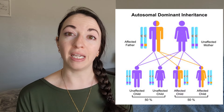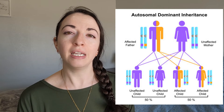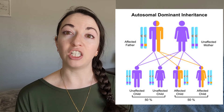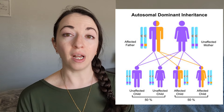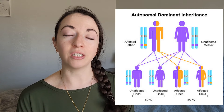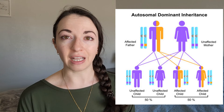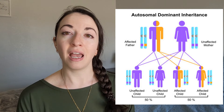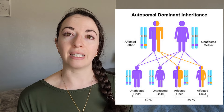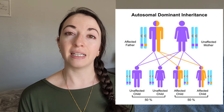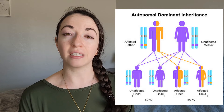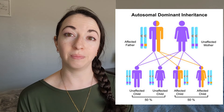The known mutations are usually found on the COL5A1, COL5A2, and sometimes on the COL1A1 gene. Classical EDS follows an autosomal dominant inheritance pattern, meaning that if a child inherits one of the known mutations for classical EDS, they will have classical EDS.